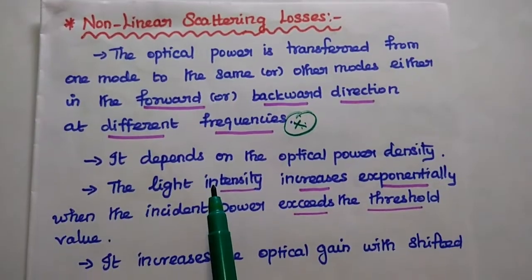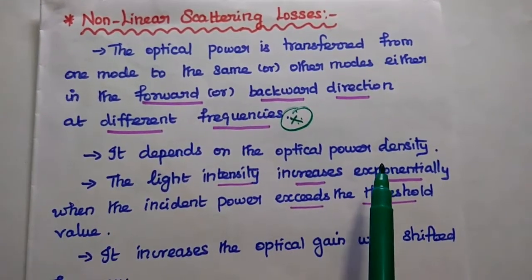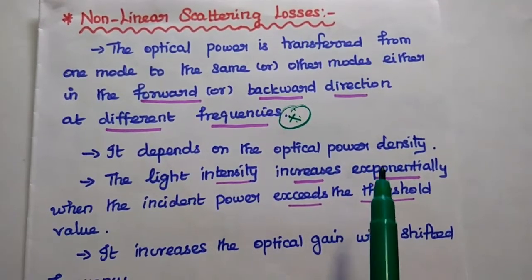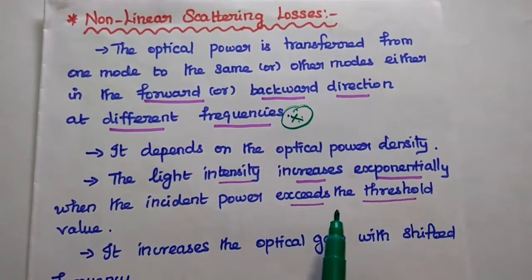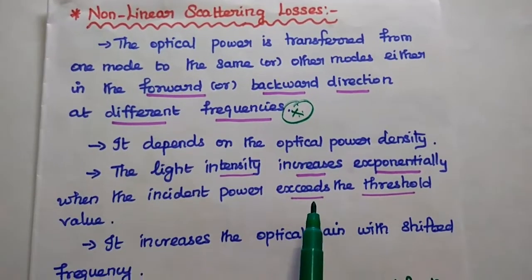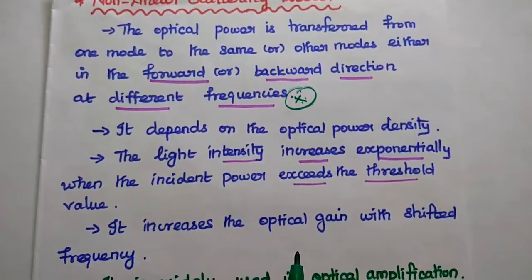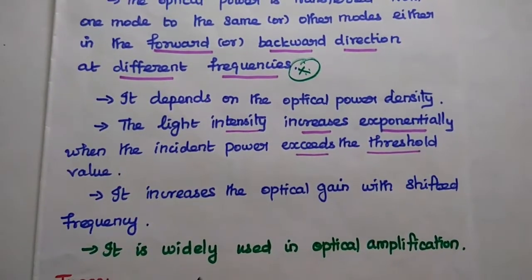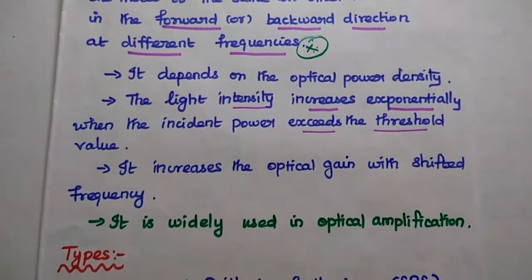Non-linear scattering losses depend on the optical power density. The optical power density maintains a certain threshold value. When the incident power exceeds this threshold value, its intensity increases exponentially, causing an optical gain with a shifted frequency. This concept is widely used in optical amplification applications.